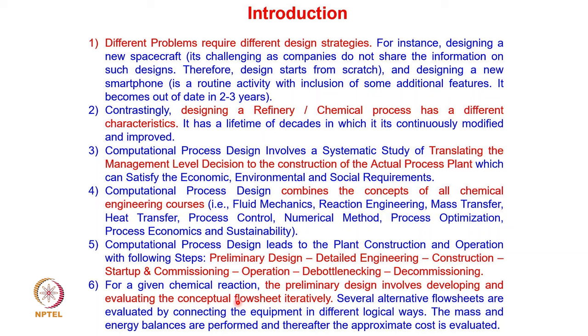For a given chemical process, the preliminary design involves developing and evaluating the conceptual flow sheet iteratively. Several alternatives are present and all these alternatives are evaluated using cost calculations and sustainability aspects. Different alternatives are obtained by rationally connecting different equipment in a process flow sheet, performing mass and energy balance, calculating cost, and selecting the best flow sheet in terms of cost, sustainability, and operational efficiency.